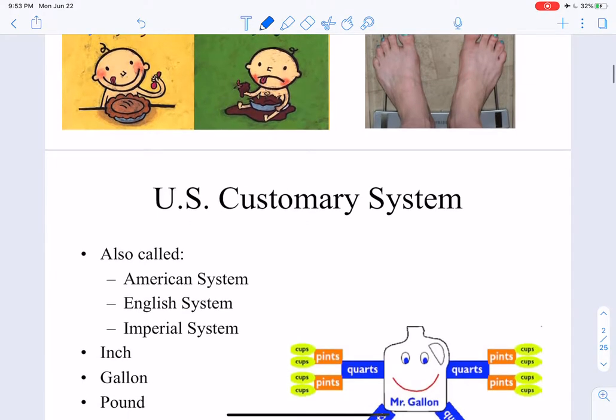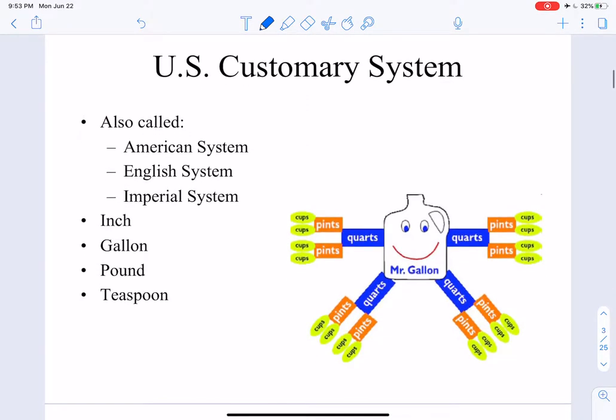Now, how do we report our measurements? Well, in this country we tend to use the US customary system unless we're doing science, and then we use the metric system. The US customary system is also called the American system, sometimes the English system, and sometimes the imperial system, because we got our system from the English.